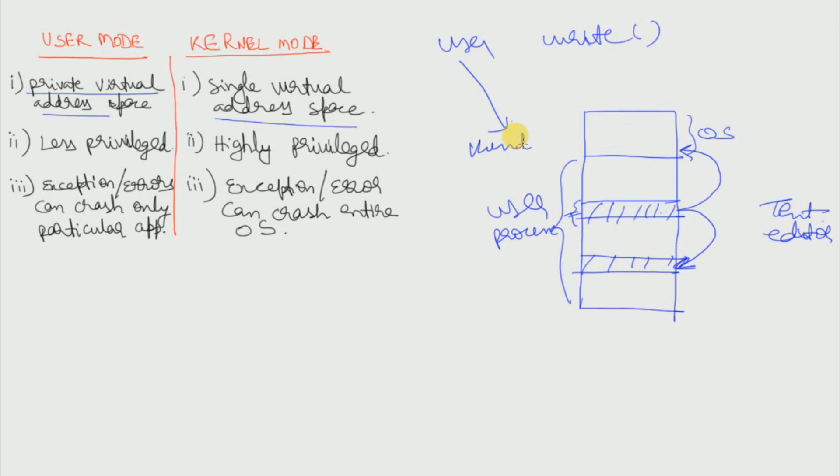So how does the kernel do it? The kernel has access to every part of this space, and so it can access the operating system, any number of processes running, or any blank memory. Therefore it looks like a single virtual address space because no matter where the space is, a kernel mode process can access that space.